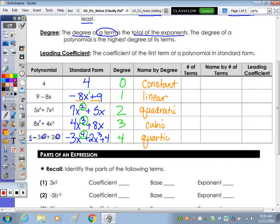Number of terms. Terms are separated by addition and subtraction signs. So here we just have the 1 term, here we have 1, 2 terms, the next one, 1, 2 terms, 1, 2 terms, and then the last one will have 1, 2, 3.